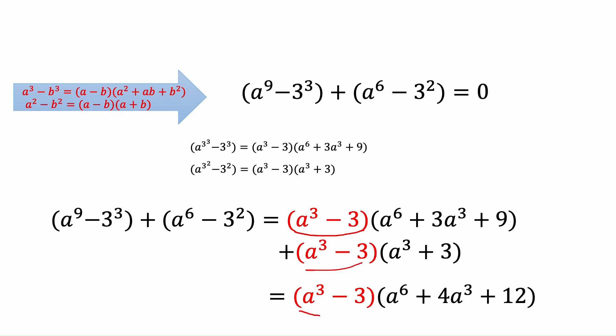It's going to be a to the power 3 minus 3 times the summation of these two parentheses that we had before. So it's going to be a to the power 6. We have 2 a to the power 3, which is going to be 4 a to the power 3. And we have 9 plus 3, which is going to be 12.